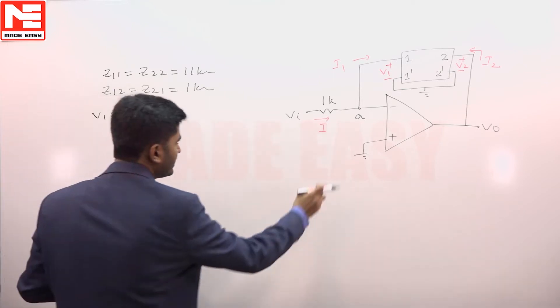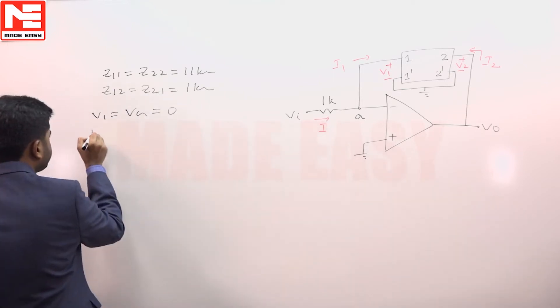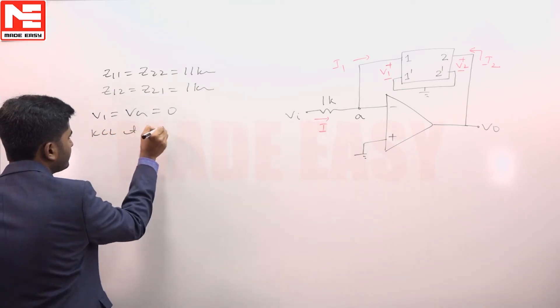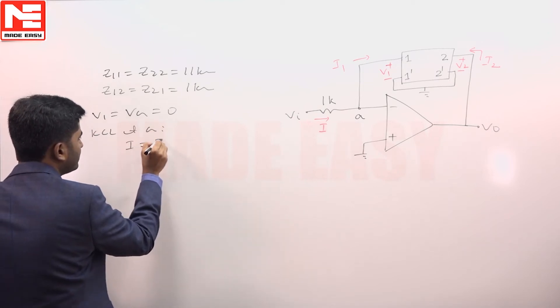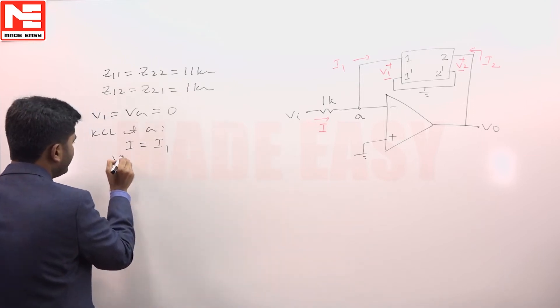And then use KCL at node A. We get i equal to i1. That i will be V i minus 0 divided by 1 k is equal to i1.